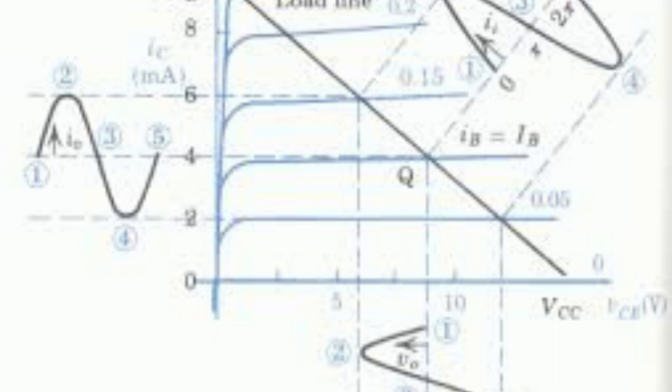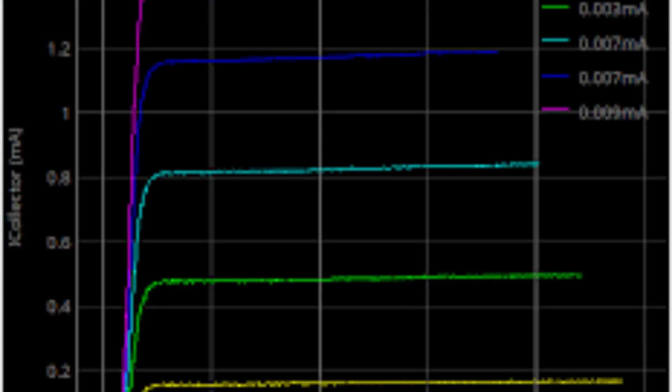In addition to the standard 2N2222, there are also several variations of the transistor, including the 2N2222A, which has slightly different electrical characteristics and a higher current rating, and the 2N2907, which is a complementary plug-and-play transistor to the 2N2222 and is commonly used in amplification and switching circuits.